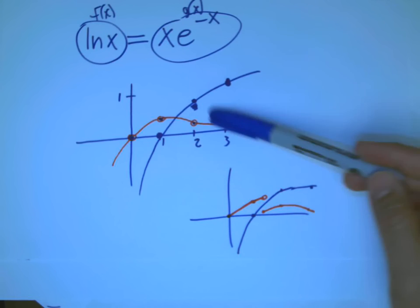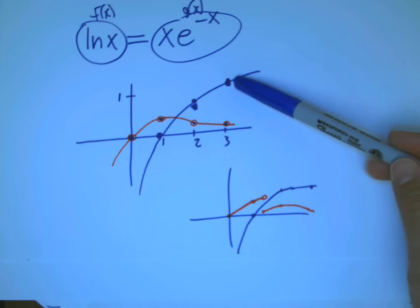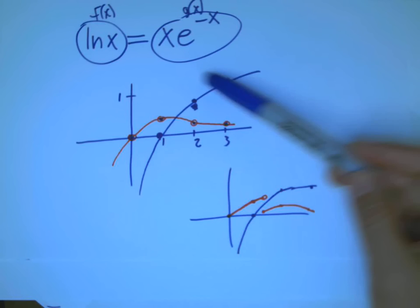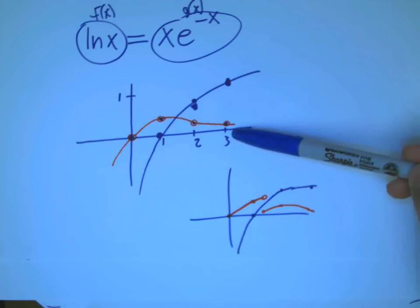And so a big use of the intermediate value theorem is to be able to extrapolate from the situation where we just have some discrete data and trust that yes, there is a missing point in there where they intersect.